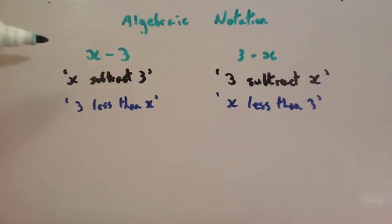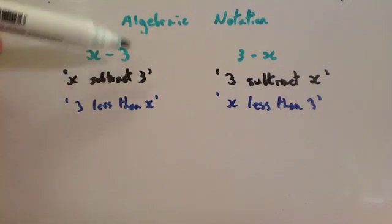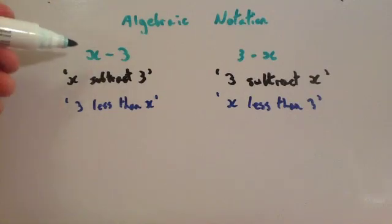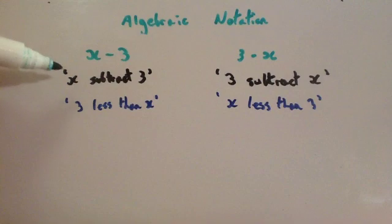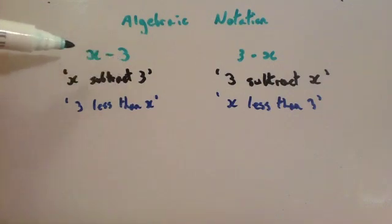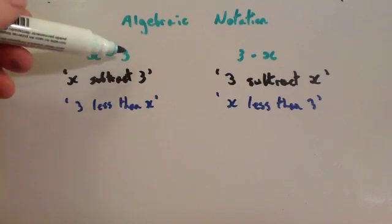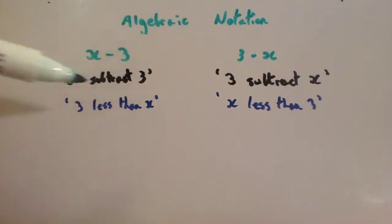This time I've written x minus 3. To read this, it would read x subtract 3. For instance, if x was equal to 10, you would do 10 take away 3, which is 7. So it reads x subtract 3, but also notice it is 3 less than x. If you had your 10 and you take away 3, you get 7, so it's 3 less than x.